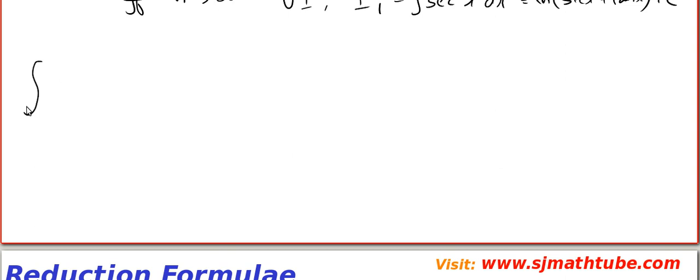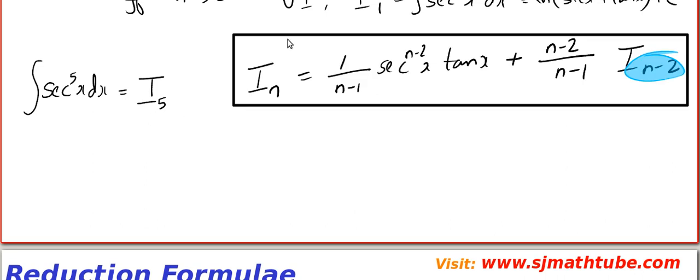Now as always, we have to use the reduction formula. Let's go for a small example. I want to evaluate integral sec to the power 5x dx. So what am I trying to find? I5. The next thing that I have to do is, I have to write the reduction formula on one side. Now I will do one thing for you. I will circle all those n so that you will find it very easy to apply the formula.